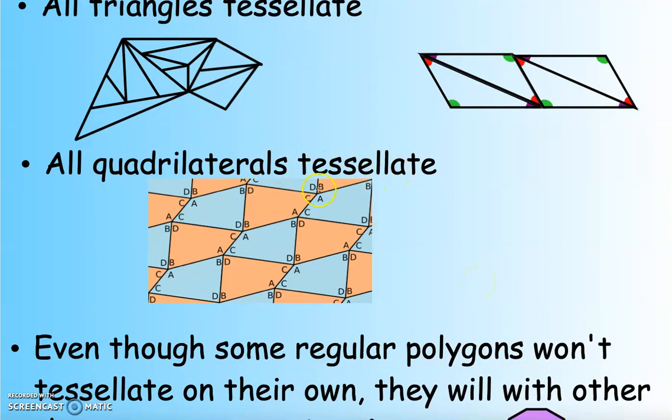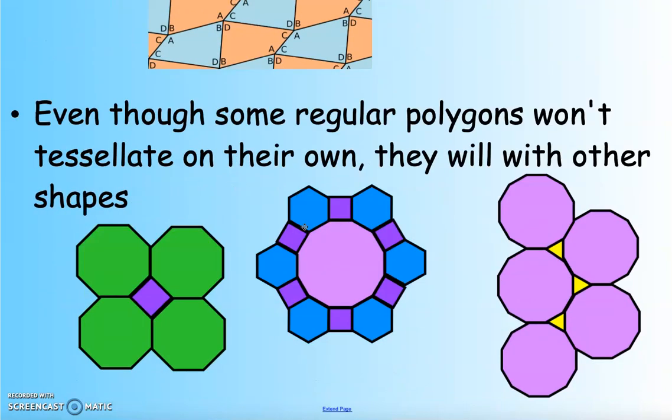All quadrilaterals tessellate. What do we know about the interior angles of all quadrilaterals? What do they always add up to be? 360. So as long as I have A, B, C, and D completely surrounding a point, I know that those angles will add up to be 360, thus covering the entire 360 degrees around that point. And finally, even though some regular polygons don't tessellate on their own, they can with other shapes. Like octagons don't tessellate on their own, but they do tessellate with squares. This purple shape is a decagon, 10 sides, and if we match it up with some hexagons and squares, you can see that we can form a tessellation. Or we can take that same decagon and match it up with some triangles, and they'll tessellate together.